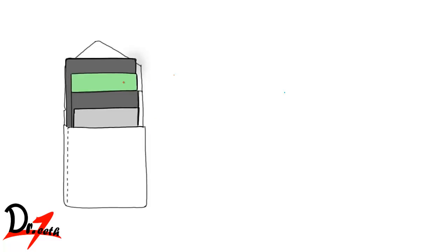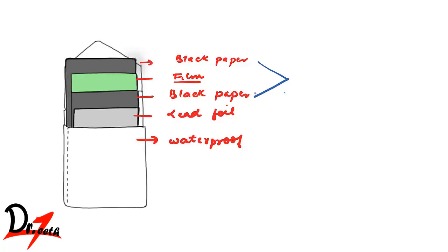So this is how our x-ray film looks from inside. So this is the outer covering, which is waterproof. And then we have the lead foil. And then we have this black paper. And then we have this film. And then once again, we have a black paper. So the black paper doesn't allow light leakage. Because if the light leaks, it will expose the film. And we won't get the image we want.